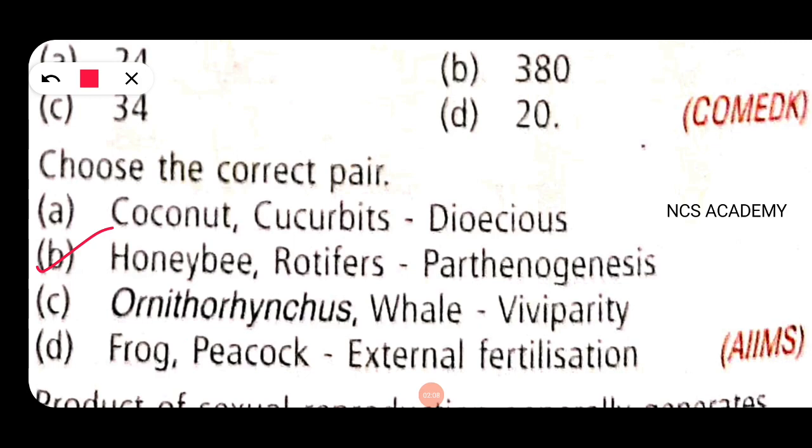Frog and Peacock shows external fertilization - external also takes place in water. Peacock shows internal fertilization, so there are two controversies. So the right option is B: Honey Bee Rotifiers Parthenogenesis.